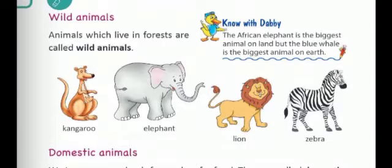Know with Dabby: The African elephant is the biggest animal on land, but the blue whale is the biggest animal on earth. Kangaroos are mostly found in Australia. The male kangaroos have a pouch which helps them to carry their babies. Kangaroos are the national animal of Australia. This is very interesting about kangaroos.